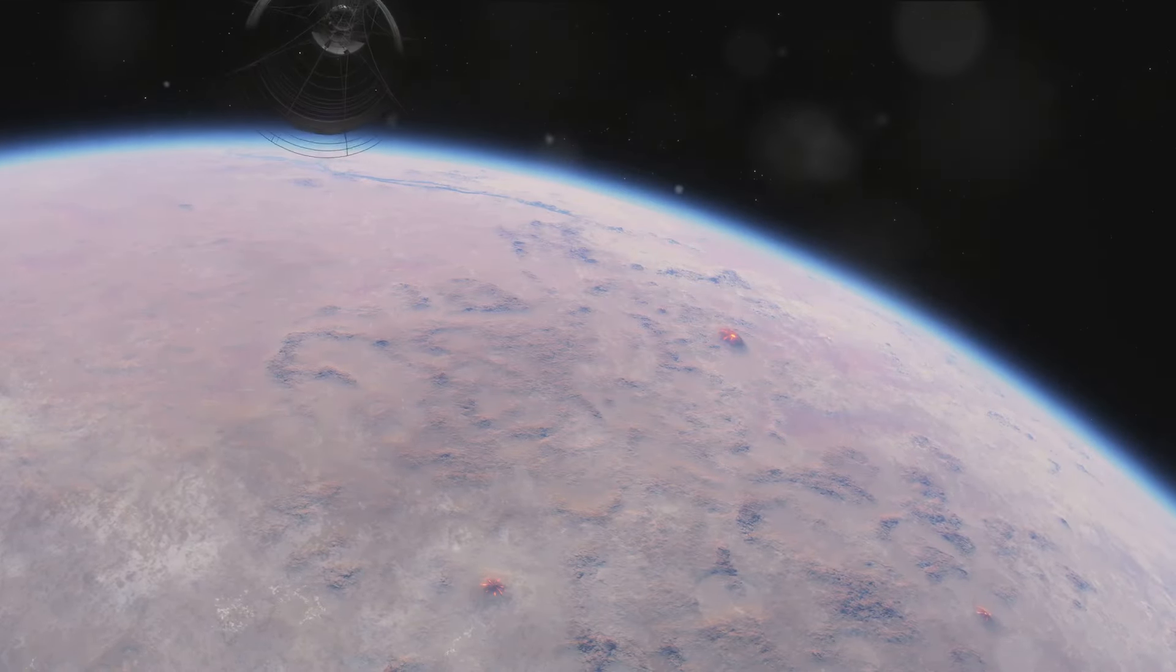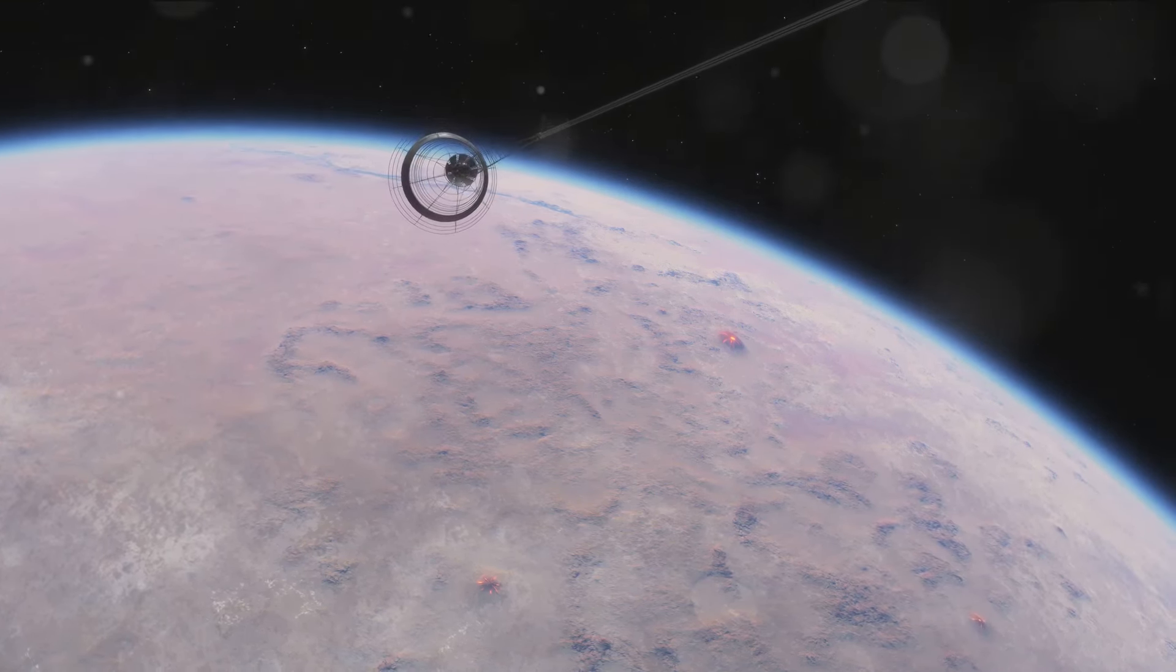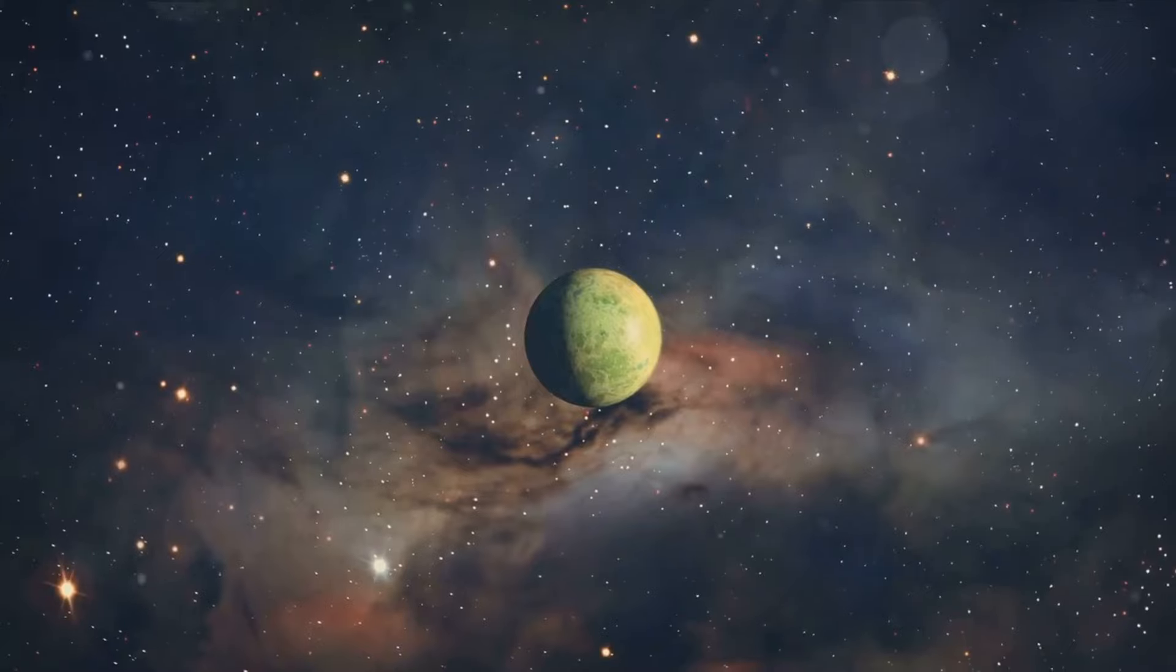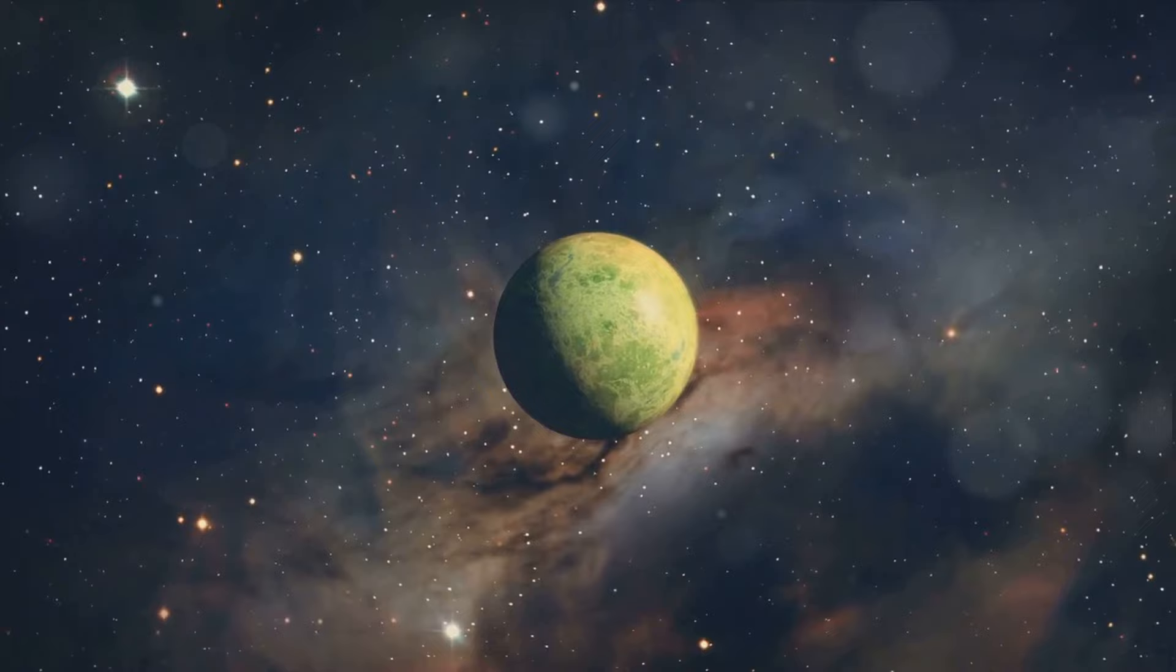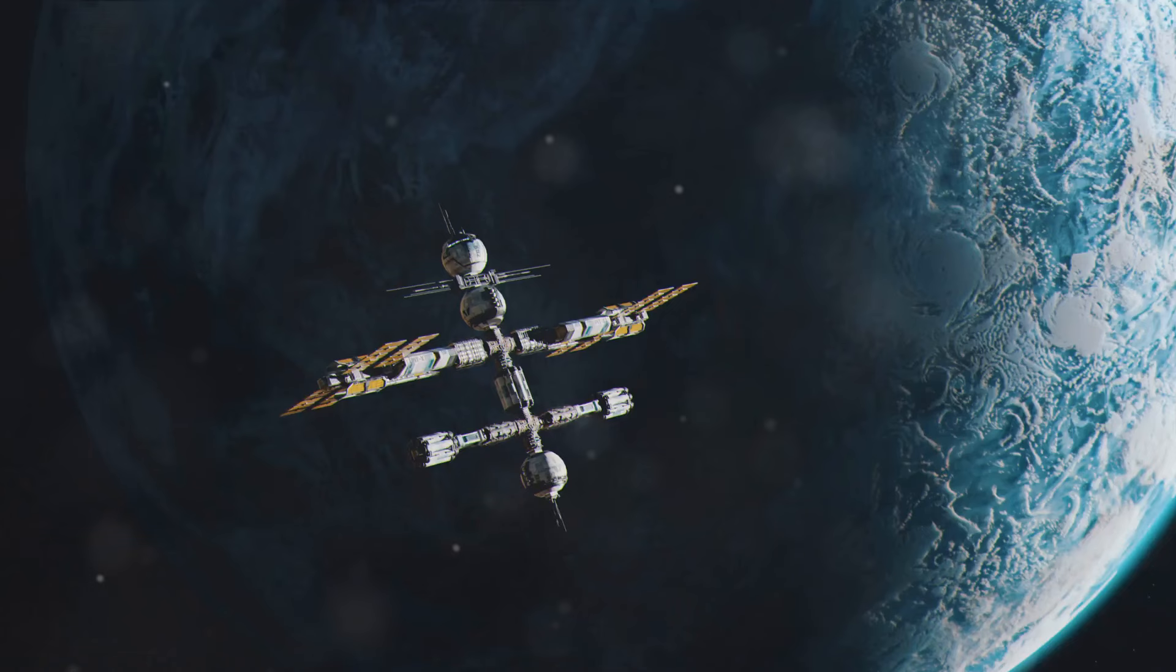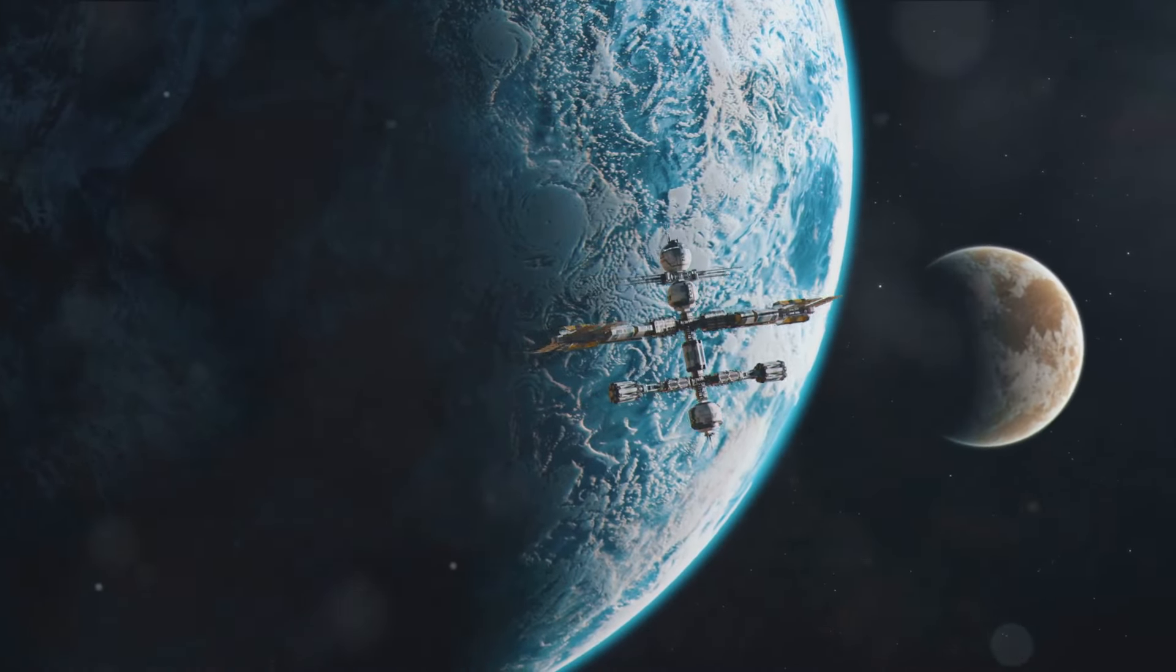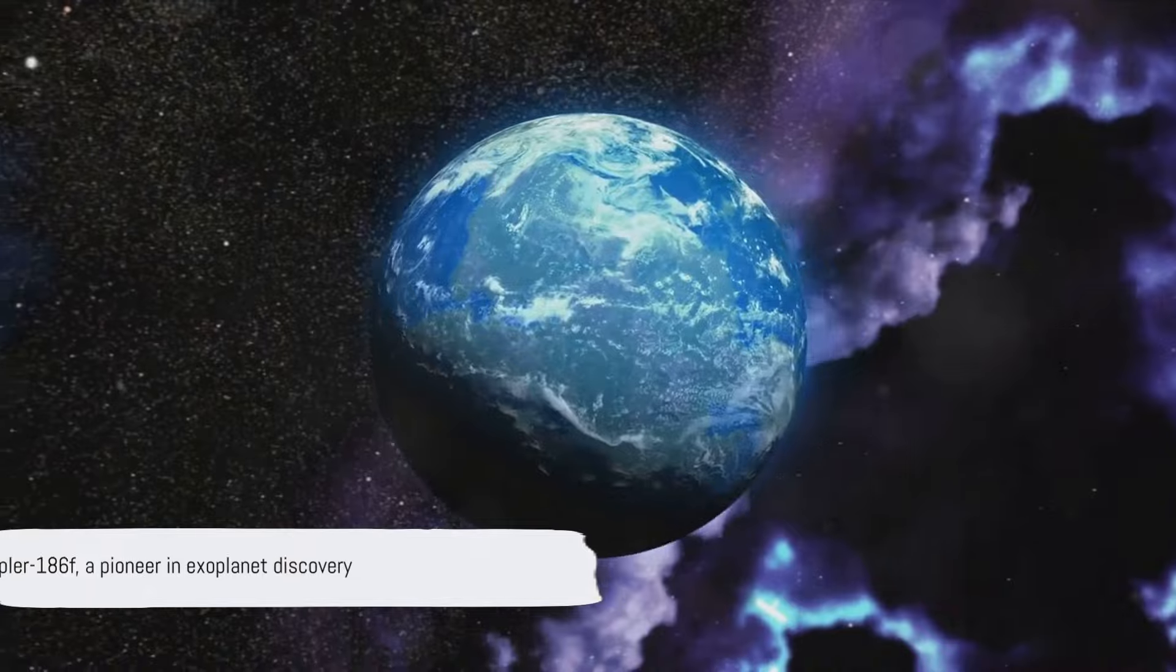This discovery has shown us that Earth-sized planets can exist in the habitable zones of their stars, paving the way for potentially limitless more discoveries. It has ignited a spark of hope, a hope that somewhere out there, in the vast expanse of the cosmos, there may be another world, another home, a place where life as we know it might exist. So as we continue our exploration, let us remember Kepler-186f as the pioneering celestial body that it is, the planet that first showed us that the universe is full of endless possibilities and that we are not alone in our quest to find life beyond Earth.